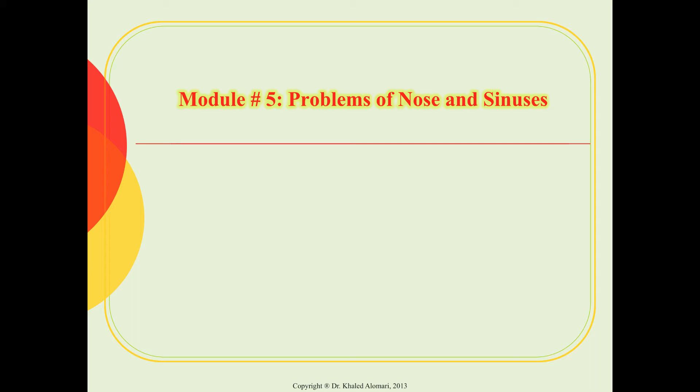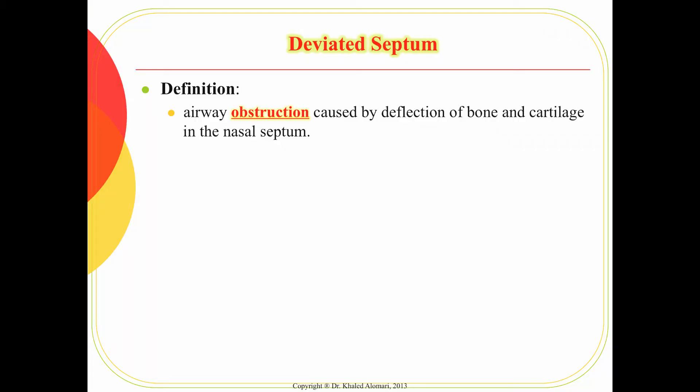Module 5: Problems of nose and sinuses. Deviated septum. By definition, deviated septum is an airway obstruction problem.